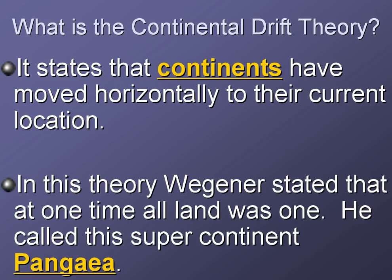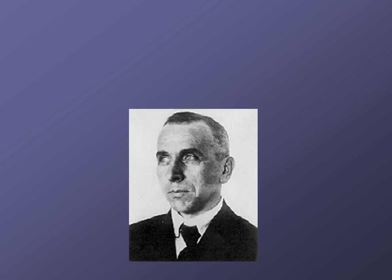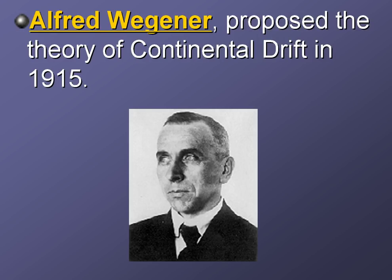First of all, there's this guy named Wegener — Alfred Wegener. You might look at it and say, doesn't it say Wagner? Well, he was German, so we're going to pronounce it Wegener, just like the Volkswagen. In this theory, Wegener stated that at one time all land was one — all the continents were connected. He called the supercontinent Pangaea, which is basically translated to mean 'all land' or 'all earth.' And here's a picture of Wegener. He proposed the theory of continental drift back in 1915.